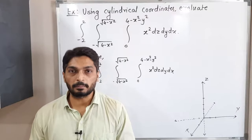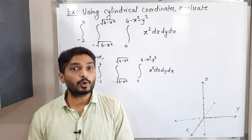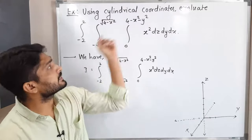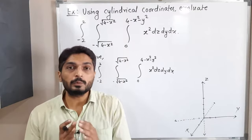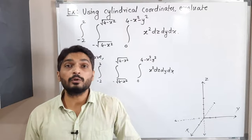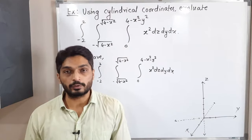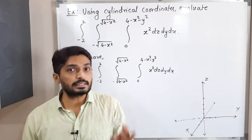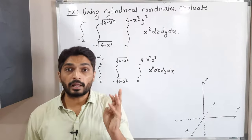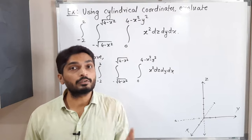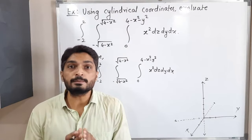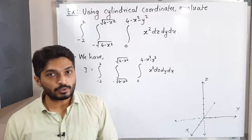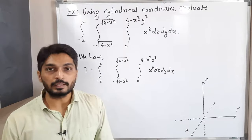Let us discuss this example. We have to solve this triple integration by using cylindrical coordinates — that means we have to convert this problem into a cylindrical coordinate system and then solve it. Keep in mind: if you have a parabola, a cylinder, or a cone, it is always better to convert the problem into cylindrical coordinates.